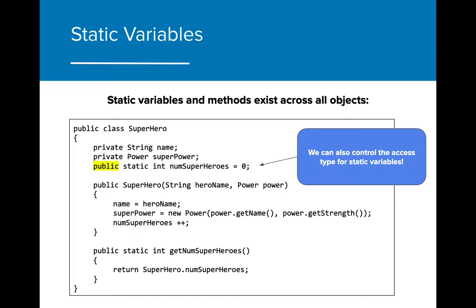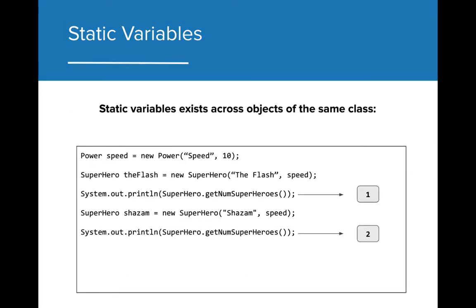It's also good to note that static methods can be both private and public, just like instance variables. By using a static variable, we are able to get the intended result. Here we see that the value of getNumSuperheroes is correct after another superhero is created. We use the SuperHero.getNumSuperheroes notation because it is a static method and needs to be called by the class.